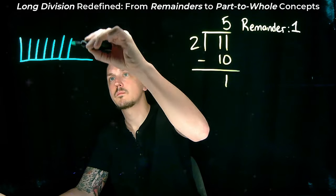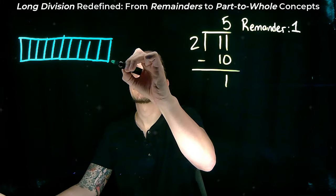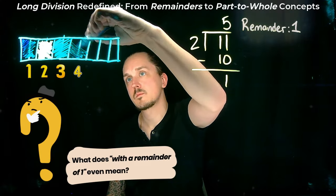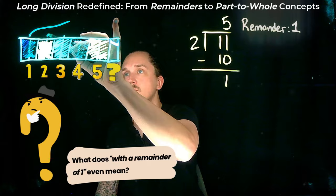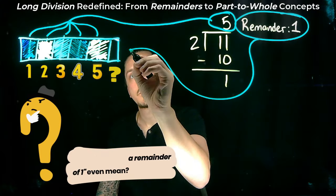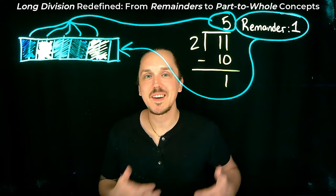You see, in the past, we stopped at the answer, 5 with a remainder of 1. But what exactly is the remainder? What does with a remainder of 1 even mean? Well, the remainder is the part left over after the division. It's like having a piece of something that doesn't quite fit. But here's where modern thinking shifts the perspective.